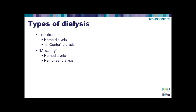There are different types of dialysis. You can think about where you do it—some people dialyze at home, some people dialyze in a center or a dialysis clinic. And then you can think about different modalities: hemodialysis, or what some people would call blood dialysis, and peritoneal dialysis. We're going to talk about both.